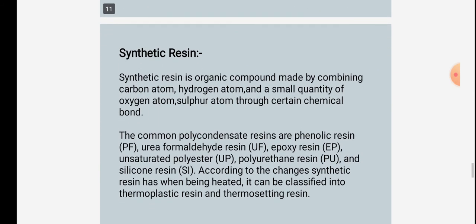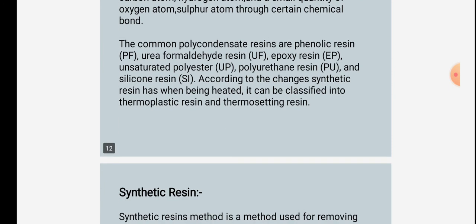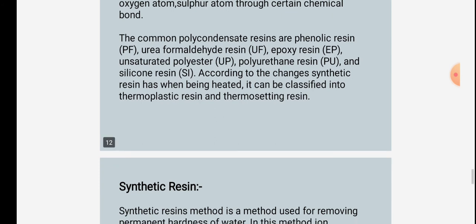Synthetic resins are organic compounds made by combining carbon atoms, hydrogen atoms, and a small quantity of oxygen atoms and sulfur atoms through certain chemical bonds. The common polycondensate resins are phenolic resin, urea-formaldehyde resin, epoxy resin, unsaturated polyester resin, polyethylene resin, and silicone resin. According to changes when being heated, synthetic resins can be classified into thermoplastic resin and thermosetting resin.